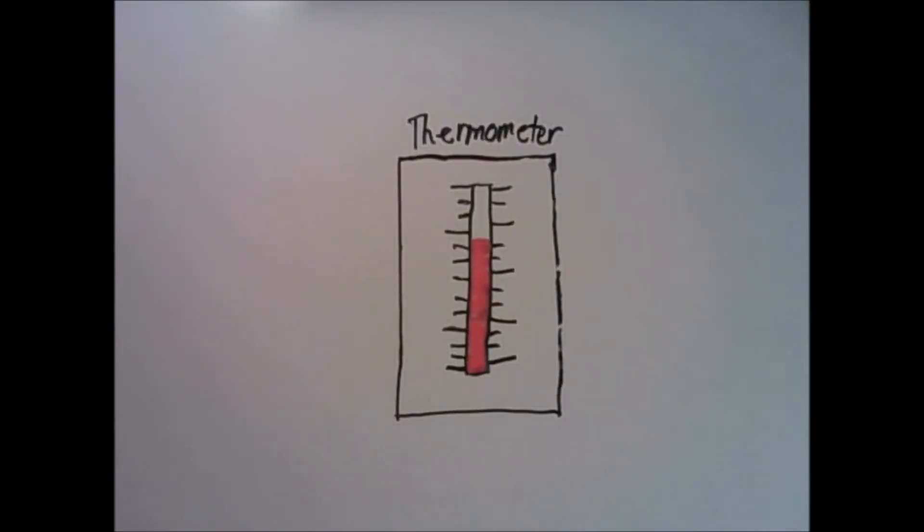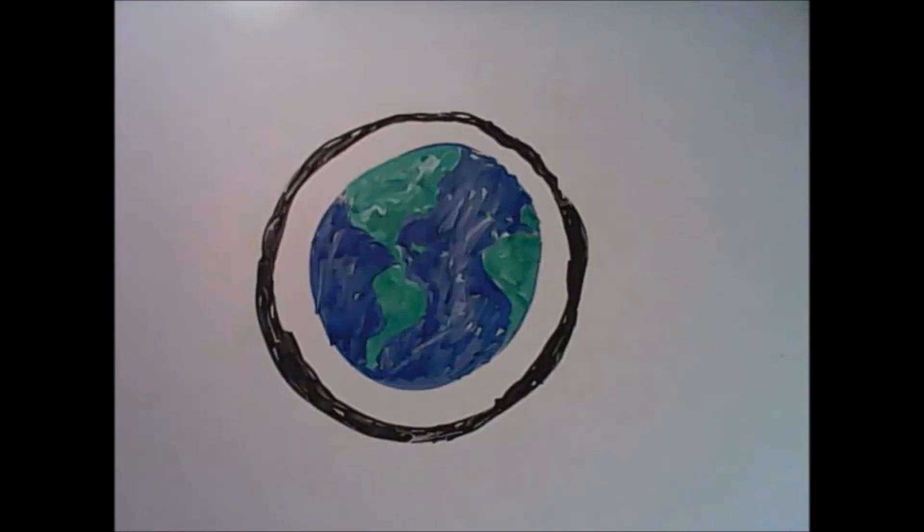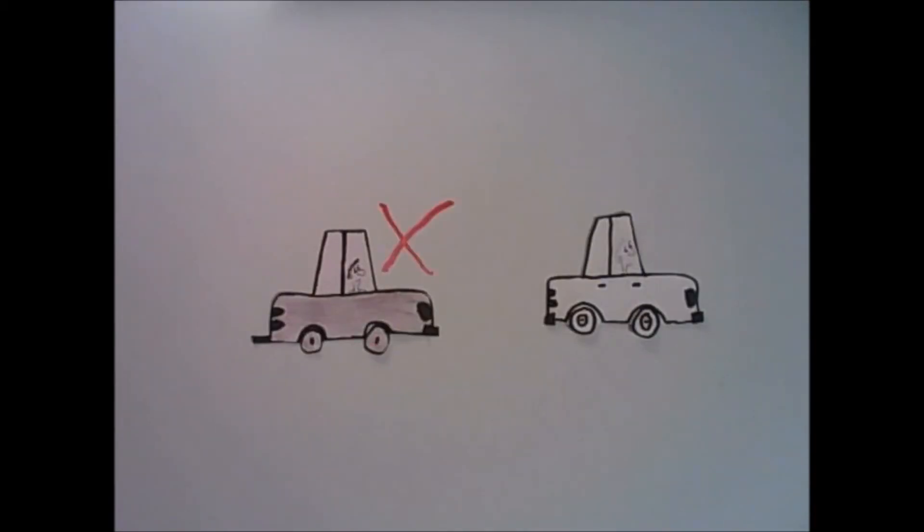increasing the temperature of the earth, which means the polar ice caps start melting, which raises sea level, floods land, and changes the environment for animals, plants, and people. We don't have to be average Joes.